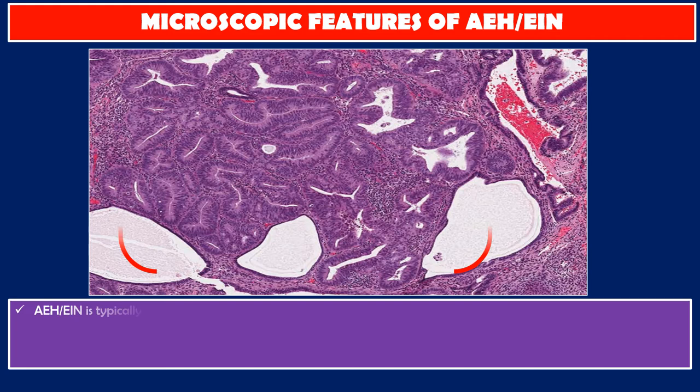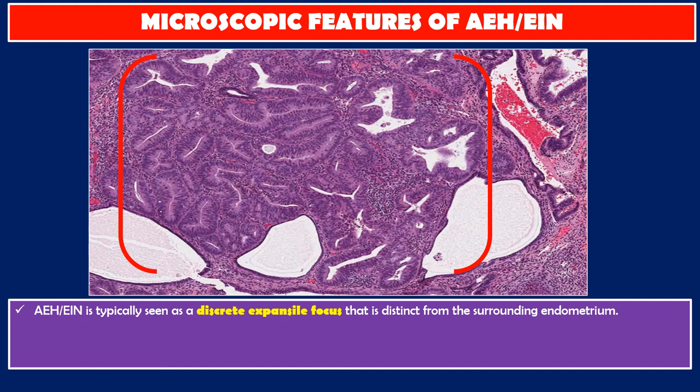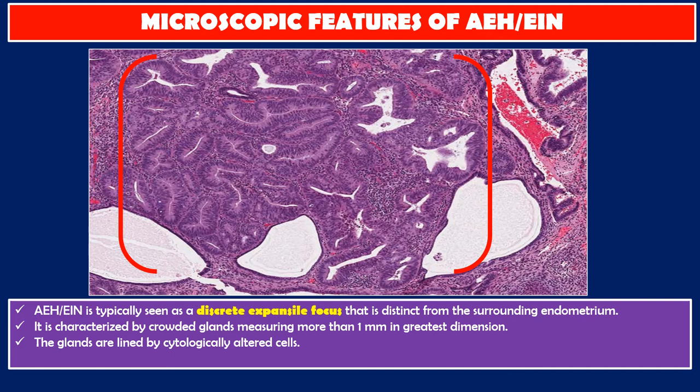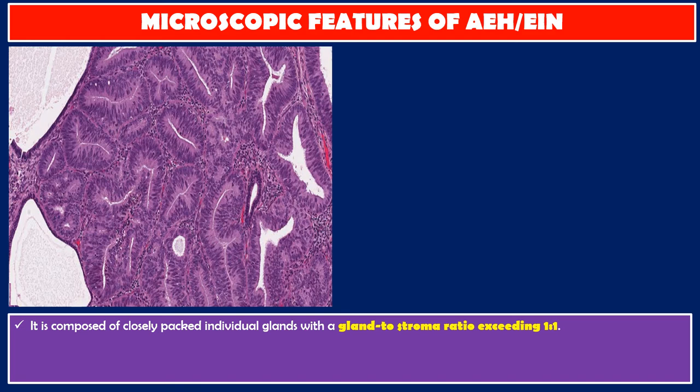Microscopic features of atypical endometrial hyperplasia: it is typically seen as a discrete expansile focus distinct from the surrounding endometrium. It is characterized by crowded glands measuring more than 1 mm in greatest dimension, lined by cytologically altered cells, with little intervening stroma.